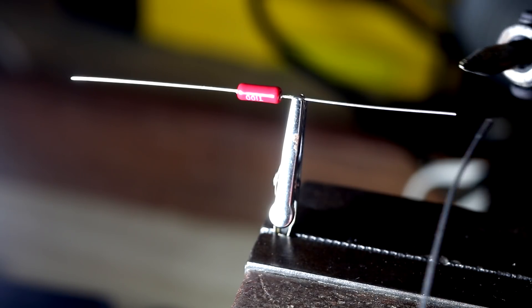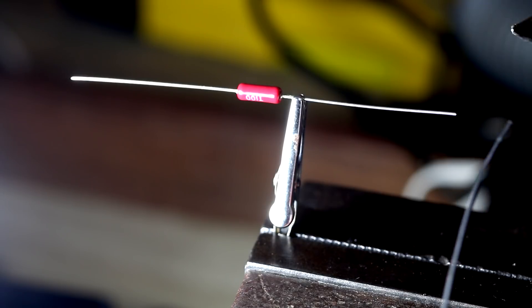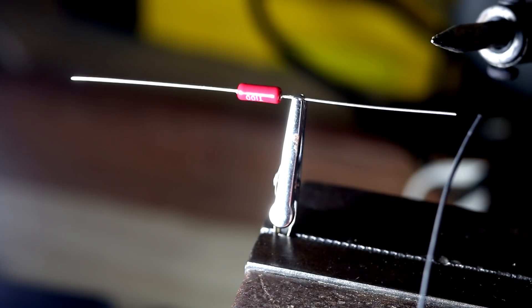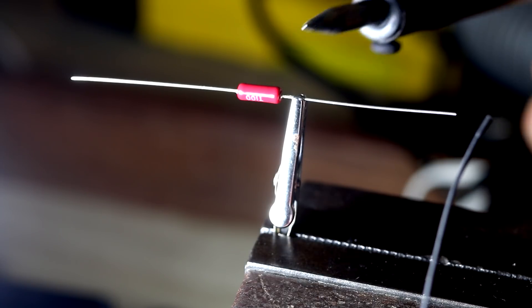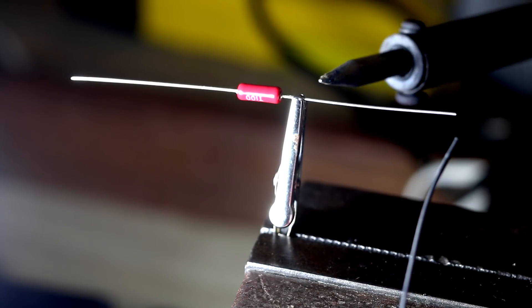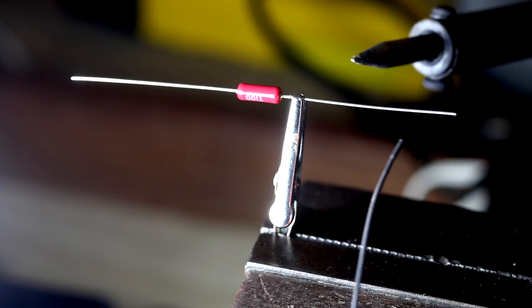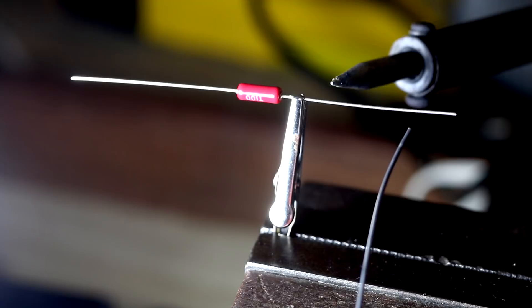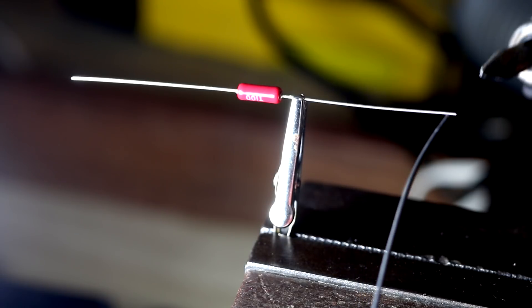So if you're new to soldering or perhaps not so good at it and you tend to leave it on the lead for a long time, you don't want to be pumping too much heat through the component. Having the alligator clip there is going to prevent heat going through the component and it's going to direct heat away down through the device.